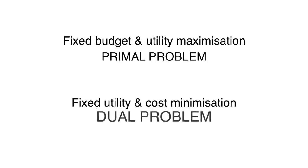We can either fix a budget and obtain the maximum utility from it, which is known as the primal problem, or we can set a level of utility we want to achieve and minimize cost in what is known as the dual problem.